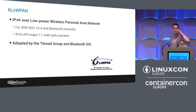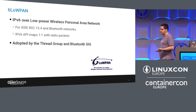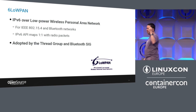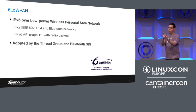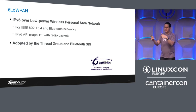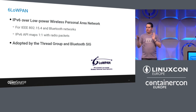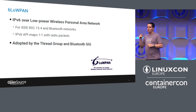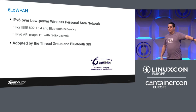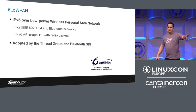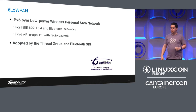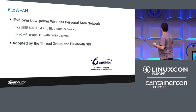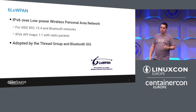Finally, 6LoWPAN was created specifically for using IPv6 on low-power networks like 802.15.4. To address the efficiency question raised earlier, they compressed the IPv6 header — since it contains a lot of redundant information — and removed the entire link-layer addressing so it's only IP. Both the Thread Group and the Bluetooth Special Interest Group adopted it for their next versions.